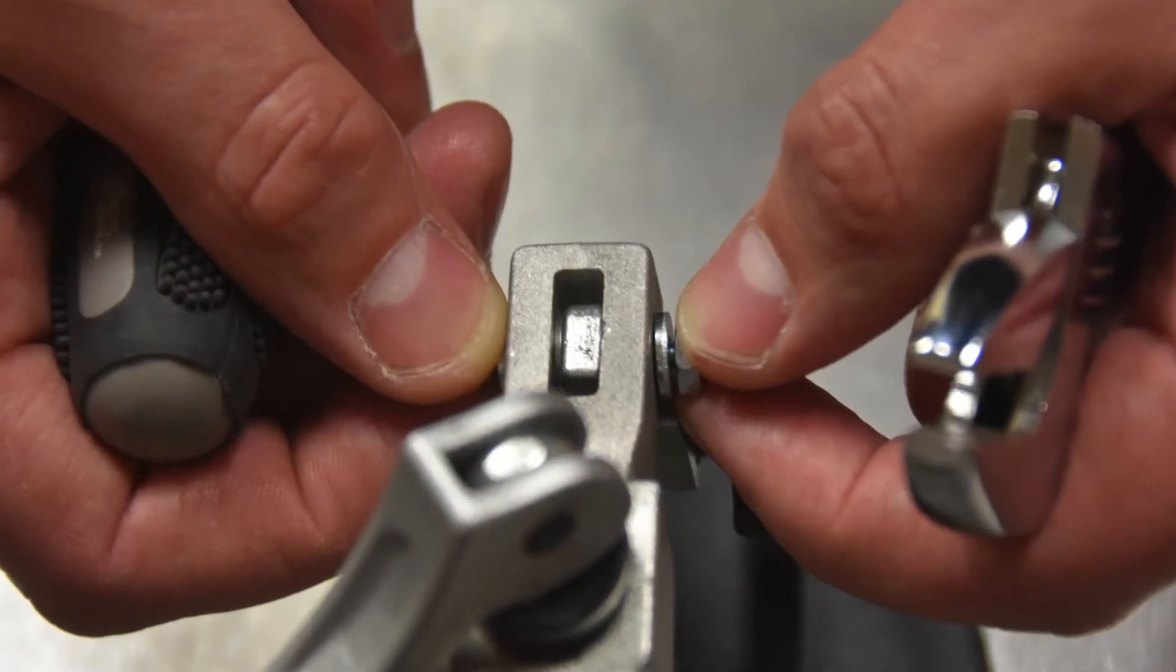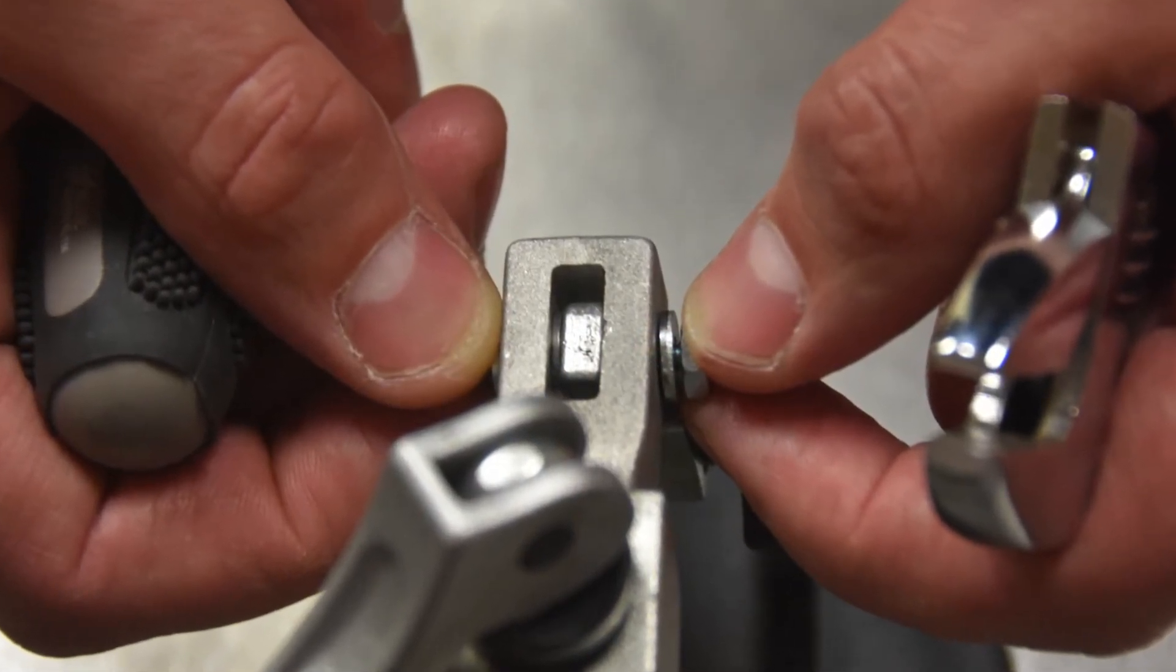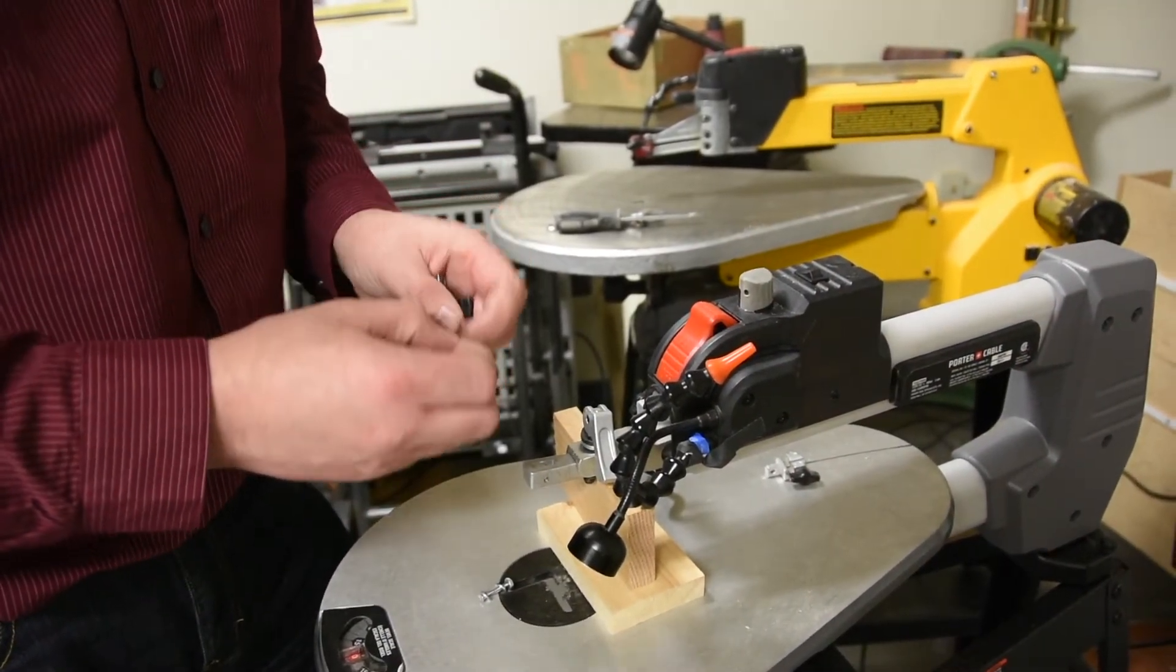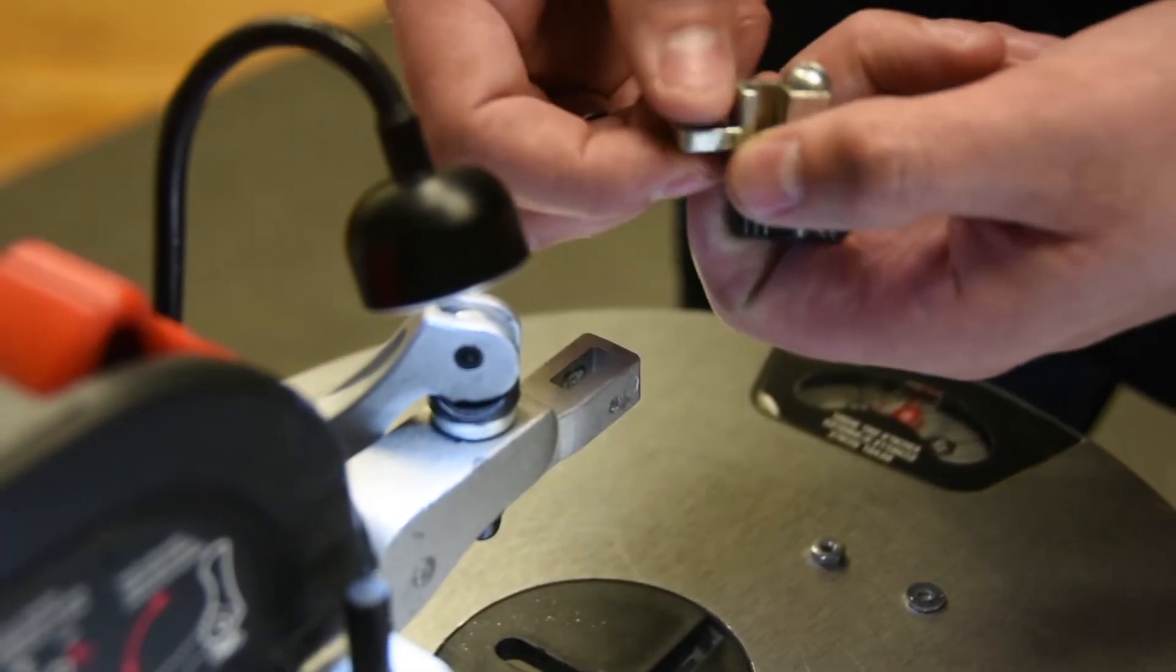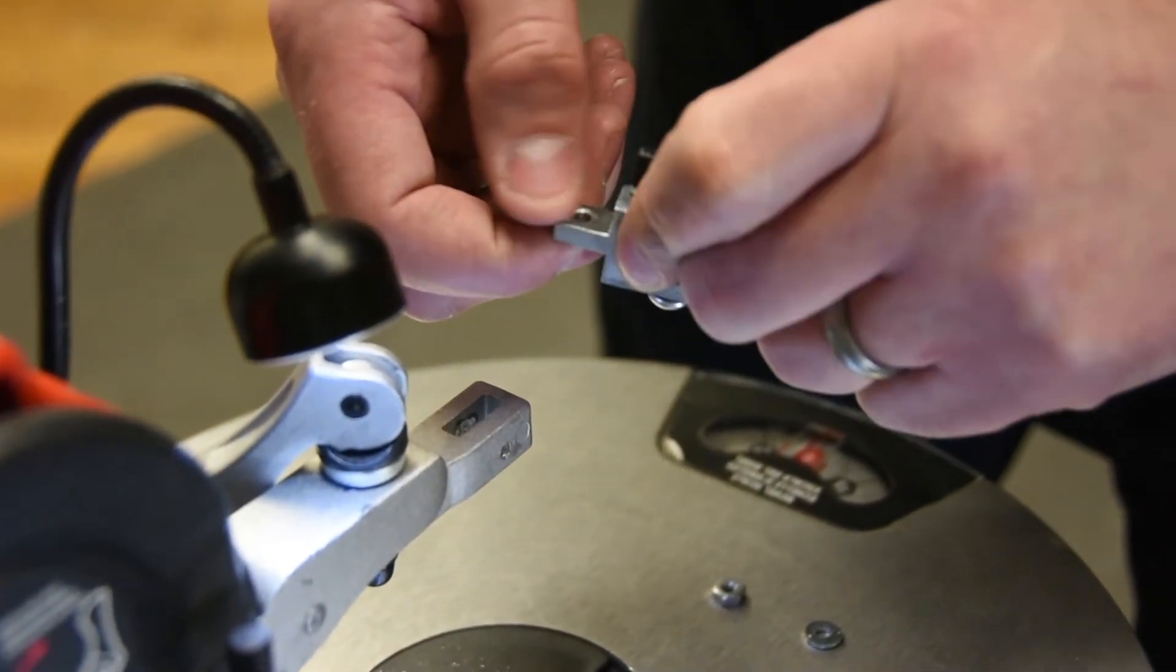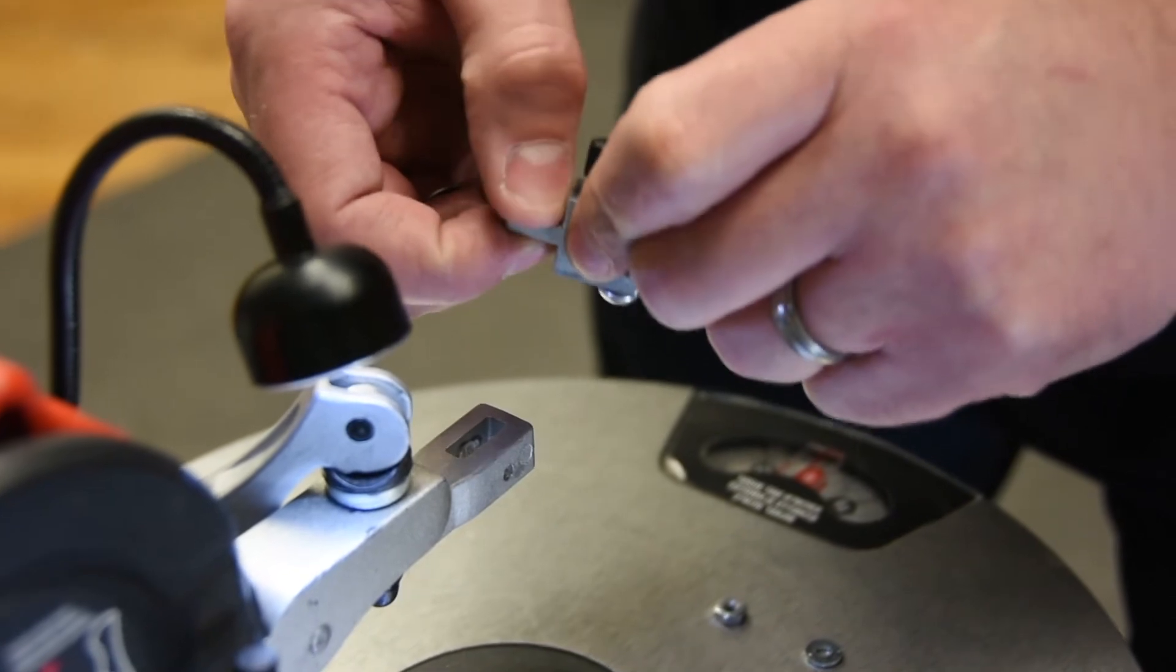Now these washers do come in different thicknesses, so you might need to spend some time with some sandpaper or a file to get the washer to fit properly. I've made sure that all the burrs and any flash from the casting process have been removed from this with a file.